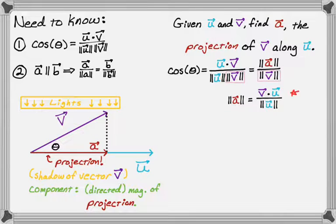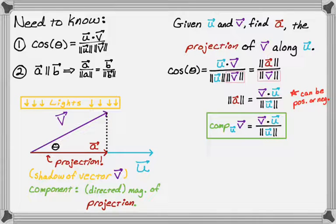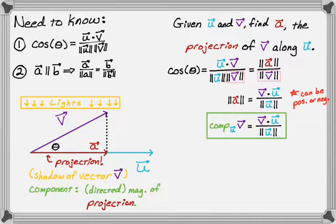There's a problem though: the dot product u dot v might be negative, and it doesn't really make sense to call a magnitude negative. That's why I defined the component as the directed magnitude — it could be positive or negative. So we call it the component, with its own notation: the component along u of v. Think of u as the base, similar to a logarithm base. The formula is v dot u over the magnitude of u, which is just v dotted with the unit vector of u, since u is the base along which we are projecting.